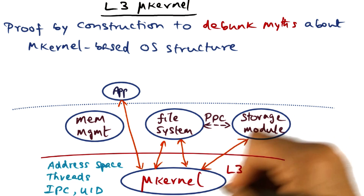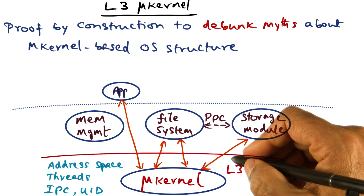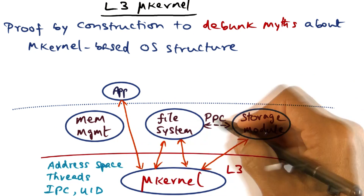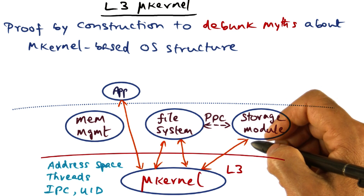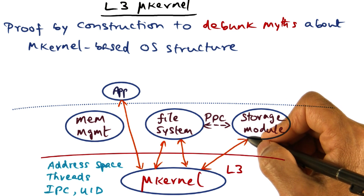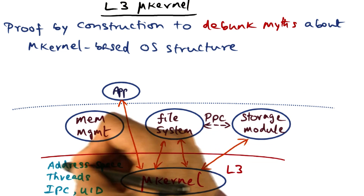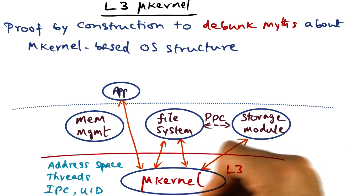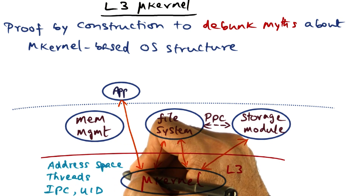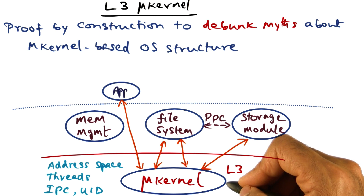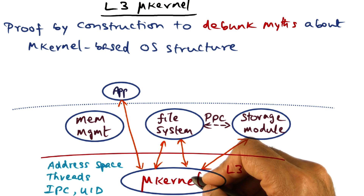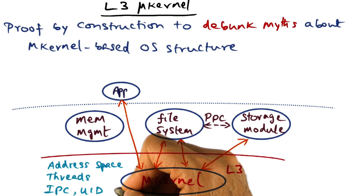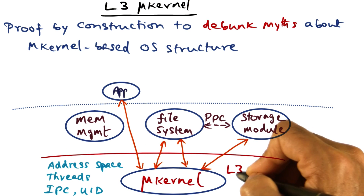L3 argues that these are fundamental abstractions that any subsystem living on top of the microkernel, or any subsystem you want to implement in a general-purpose operating system, requires these facilities. Therefore, L3 argues that microkernels should provide this as the minimal set of abstractions. How they actually provide it may differ from one microkernel to another, but this is the minimal set of abstractions a microkernel should provide.